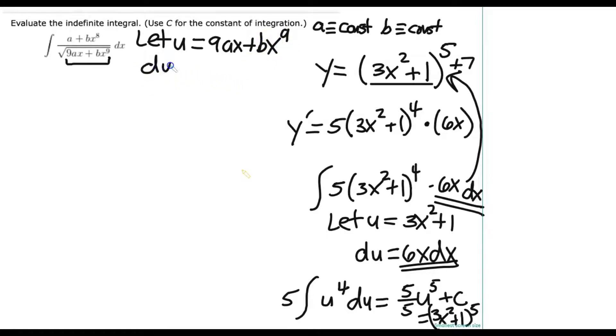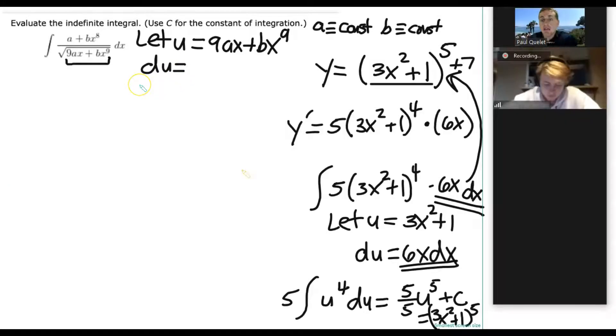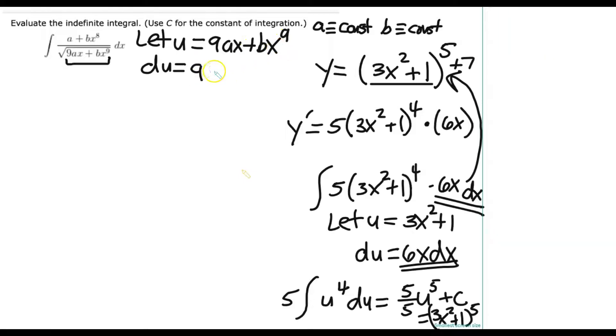So, we want to express du. Now remember, du is, it's like taking the derivative, but you're actually taking what's called the differential. Just think of taking each side of this equation, u equals whatever, and shrinking it down to infinitesimal size. So, that's why you'll basically take the derivative here, but you'll also write a dx. So, what's the derivative of 9ax plus bx to the ninth? 9a. 9a plus? Plus 9bx to the eighth. And don't forget, this is all multiplied by dx.